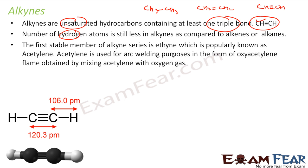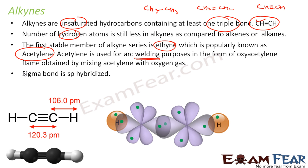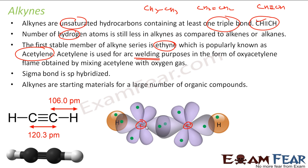The first stable member is called ethine and its common name is acetylene. It is used for welding purposes. The sigma bond is sp-hybridized — the 2 carbon atoms are sp-hybridized. Alkynes are also starting materials for a large number of organic compounds; for example, you can create benzene out of ethynes.